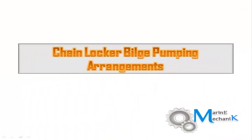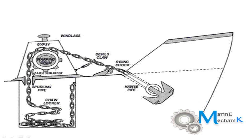Chain Locker Bilge Pumping Arrangements. The picture here shows the chain locker arrangement along with its anchor and chain of a small craft. As you can see, the anchor comes through the hawse pipe and then around the windlass, it enters the chain locker through the spurling pipe.